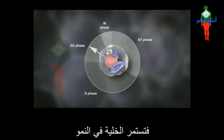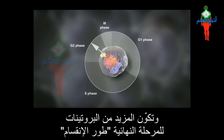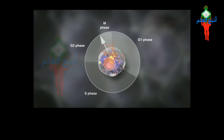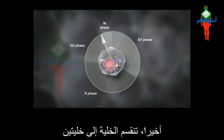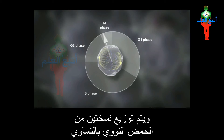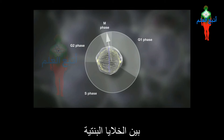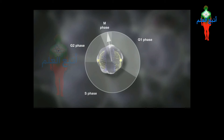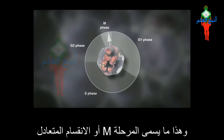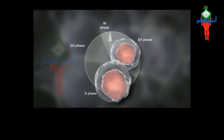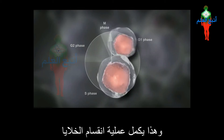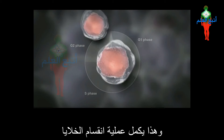After a second growth phase called G2, the cell continues to grow and make more proteins for the final stage. The cell finally splits into two cells and the two copies of DNA are distributed equally between the two daughter cells. This is called the M phase or mitosis. This completes the process of cell division.